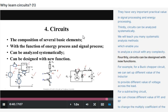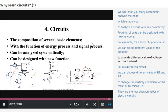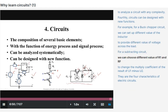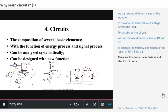Fourthly, circuits can be designed with new functions. For example, for a buck chopper circuit, we can set up different values of the inductor to provide different values of voltage across the load. For a subtracting circuit, we can choose different values of RF to change the multiply coefficient of the result U1 minus U2. These are the four characteristics of electric circuits.